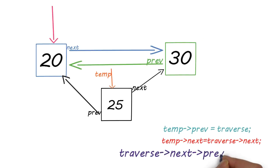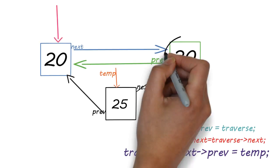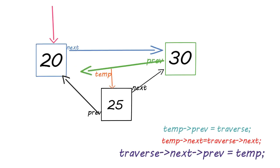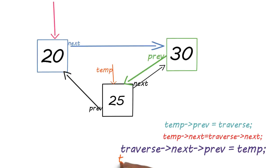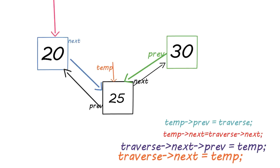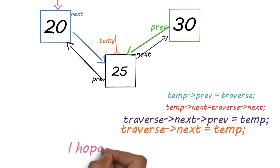Then traverse->next->prev = temp. This sounds confusing but it's not. Where is traverse->next pointing? That is node 30. So the previous pointer of 30 now points to temp. Finally traverse->next = temp, meaning traverse's next pointer now points to temp. The node is successfully inserted in the middle.